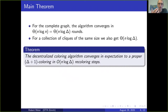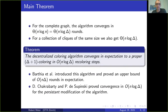Our main result in this paper is that this bound of n log delta, which we saw is tight for all combinations of delta and n, is actually true as an upper bound for all graphs.